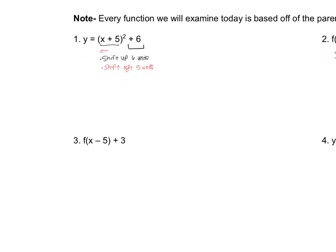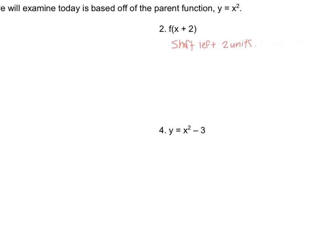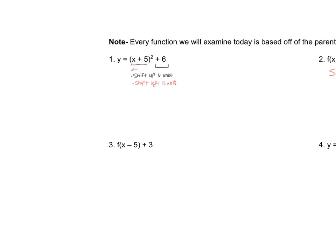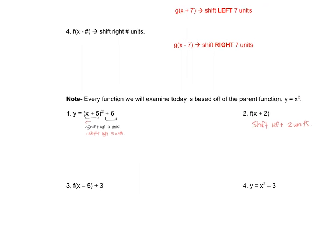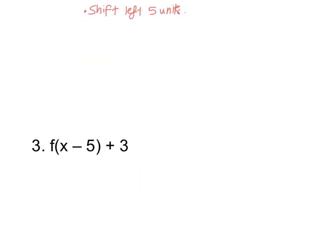Now we're going to go into number three, where we have f(x - 5) + 3. And I always go outside first. This +3 tells me I'm shifting up. So I'm going to shift up three units. And this -5 tells me I'm shifting right five.